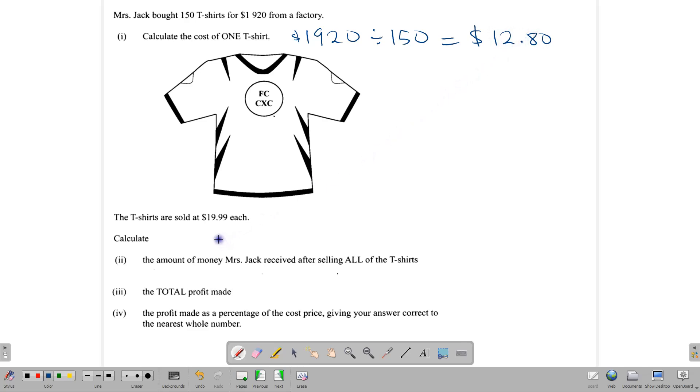Now, the second part of the question says that shirts are sold for $19.99 each. Calculate the amount of money that Mrs. Jack receives after selling all the shirts. So each shirt is sold at $19.99. And there are 150 shirts. So we multiply that, and that gives us a total of $2,998.50. So run that through your calculator and you get that answer.